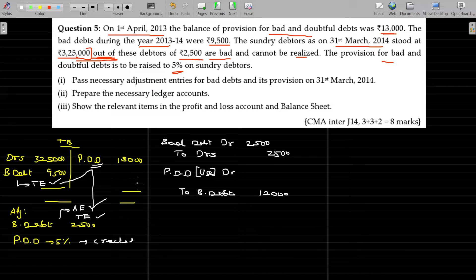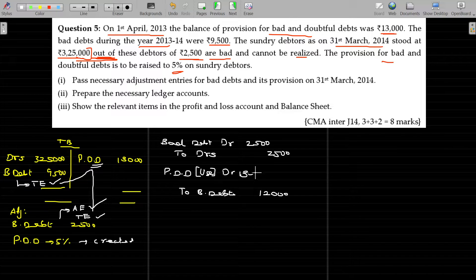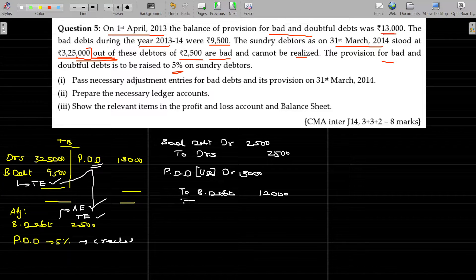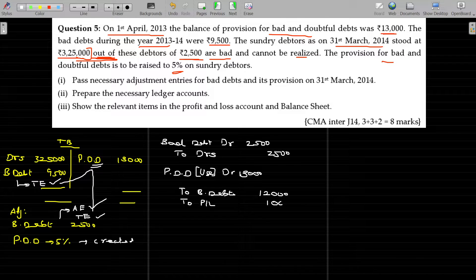But we have the PDD of rupees 13,000. We have the PDD of rupees 13,000. Surplus 1,000 can be transferable to the P&L account. To P&L account, 1,000 can be transferable.